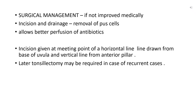For surgical management, if the patient does not improve with medical treatment, aspiration using a 16-gauge needle or incision and drainage can be performed. The incision site is at the meeting point of the horizontal line from the base of the uvula and the vertical line from the anterior pillar. Incision and drainage removes pus, allows better perfusion of IV antibiotics, and provides more oxygenation to infected tissue. Tonsillectomy — hot or cold — may be performed in cases of recurrent peritonsillar abscess.